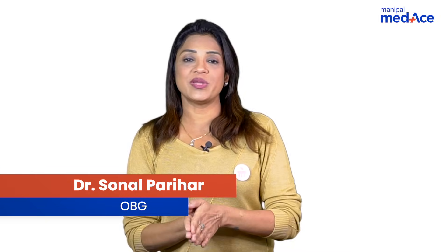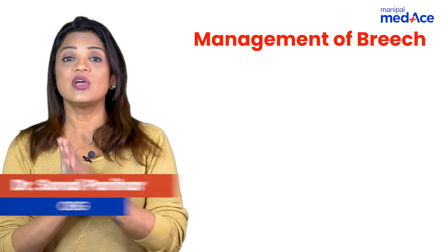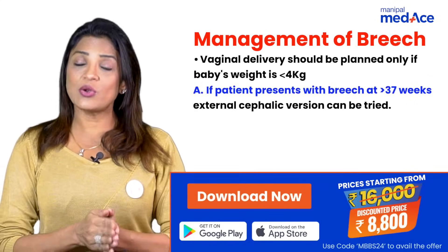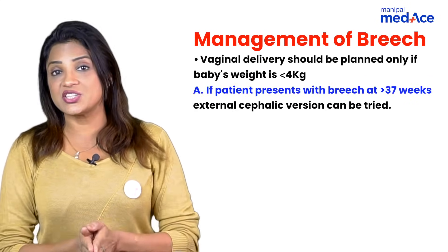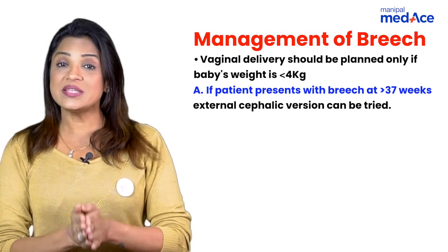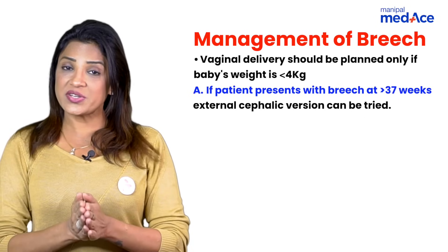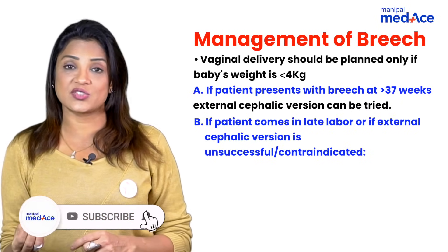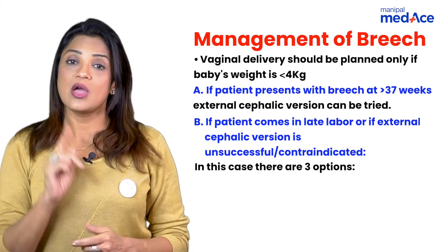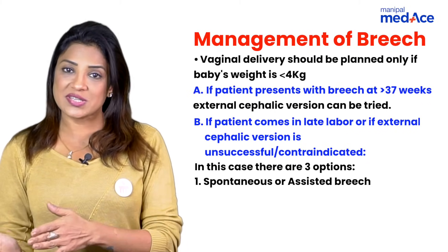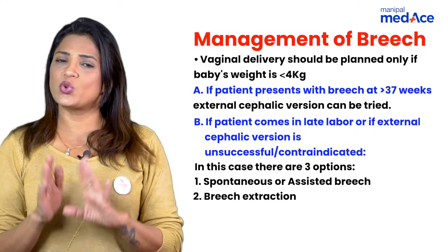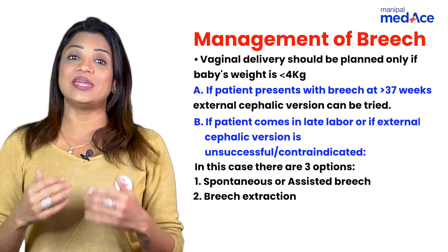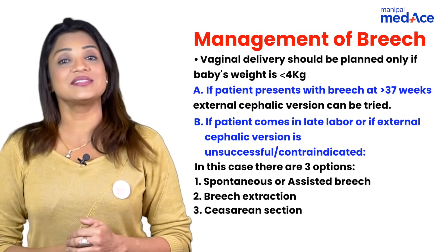Let's quickly revise the management of breech. For ECV, the patient should be either in early labor or not in labor, and gestational age should be more than 37 weeks — she should not be pre-term. If the patient is in late labor or ECV has been done twice unsuccessfully, you have three options: assisted breech, breech extraction (which we do not do anymore — the entire baby is extracted without any effort from the patient), and caesarean delivery.